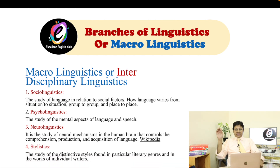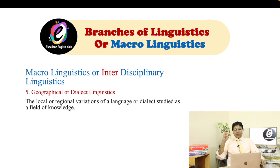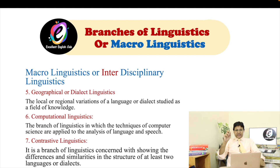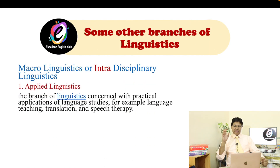Next is stylistics — the study of distinctive styles found in particular literary genres and in works of individual writers. Number five: geographical or dialect linguistics — the local or regional variations of a language or dialect studied as a field of knowledge. Number six: computational linguistics — the branch in which techniques of computer science are applied to analyze language and speech. Next: contrastive linguistics — a branch concerned with showing the differences and similarities in the structure of at least two languages or dialects.